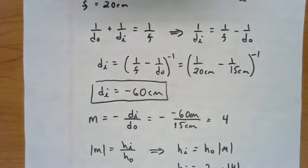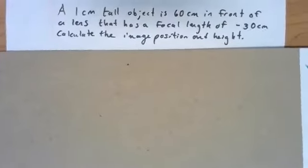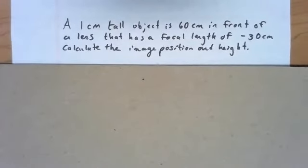So I'm going to give you another example, except I'm going to ask that you pause the video and work it out on your own. This is just much better to try it out on your own before I go through it. And then you can check yourself. So take a moment off video. Try this out. A one centimeter tall object is 60 centimeters in front of a lens that has a focal length of negative 30 centimeters. Calculate the image position and height.